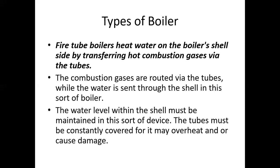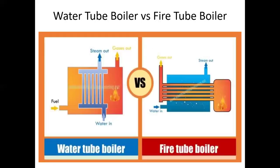To illustrate the difference: in a water tube boiler, what's inside the tube is the liquid water being converted into steam, and outside the tube is the furnace containing the hot gases. In a fire tube boiler, what is inside the tube are the exhaust or hot combustion gases, and inside the shell is the water being converted into steam.